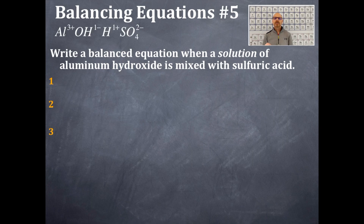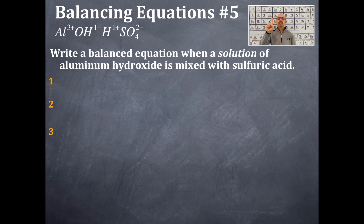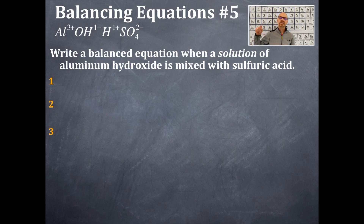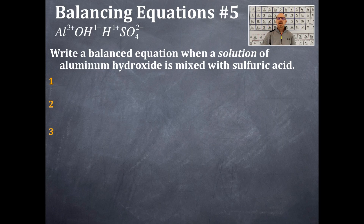Aluminum is a three plus charge — that's a periodic trend. Hydroxide is a polyatomic ion with a one minus charge. Sulfuric acid comes from sulfate. Taking the three plus charge on aluminum and the one minus charge on hydroxide, absolute value, flip, bring down — I get Al(OH)₃, and that's aqueous because the problem says 'solution.' Then for sulfuric acid, hydrogen is one plus and sulfate is two minus — absolute value, flip, bring down — I get H₂SO₄. All acids are aqueous.